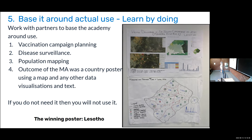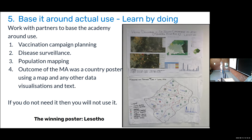Part of the success of the academy was basing it around actual use - learn by doing. Sylvia put up a poster from Lesotho who won, showing what the poster actually looked like. Participants worked with their partners around actual use cases: did they want to use this for vaccination, disease surveillance, or population mapping? The outcome of the Maps Academy was a country poster using a map and any other data visualizations and text - maps, charts, pivot tables.